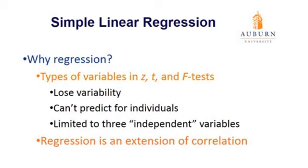Regression allows us to address all three of those limitations of Z, T, and F tests. We retain individual variability, and because of that we're able to predict for individuals. With regression we can also have more than three independent variables — in fact, as many as we like, as long as they're uncorrelated with each other. Regression itself is an extension of correlation.